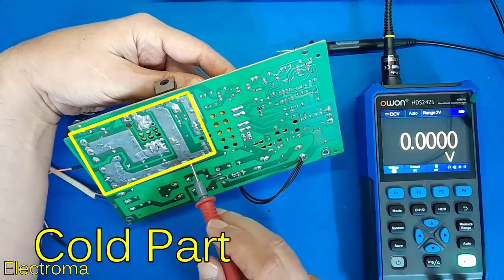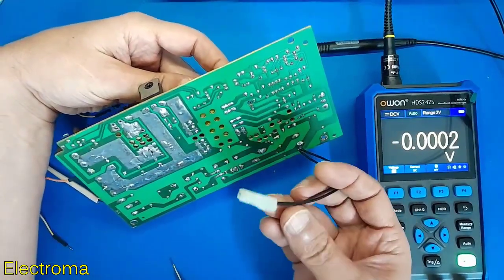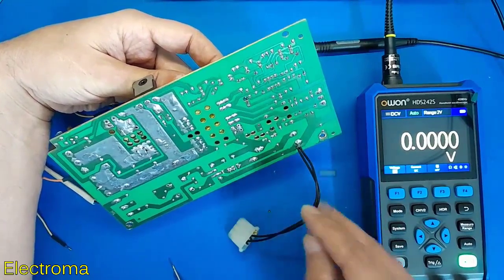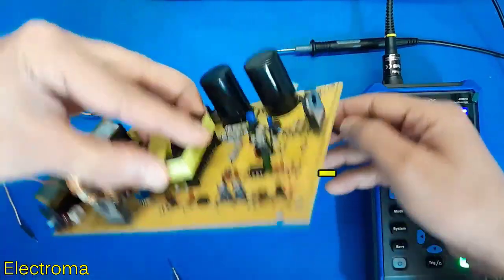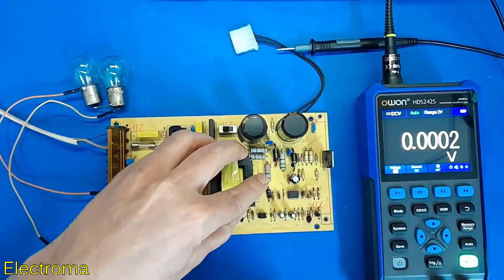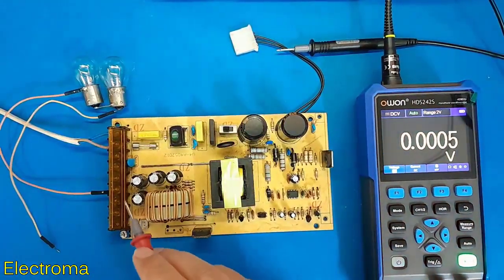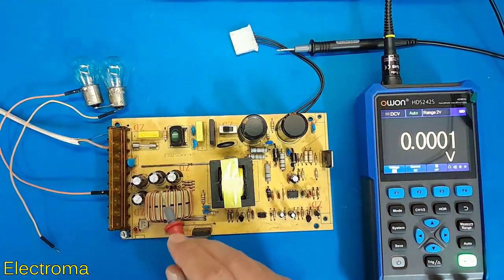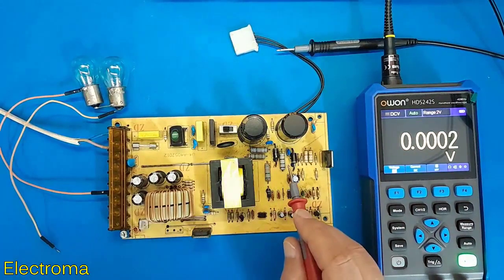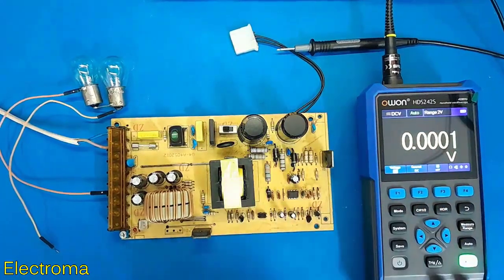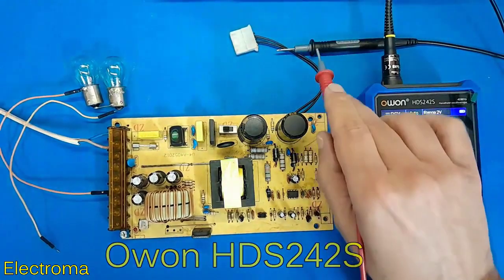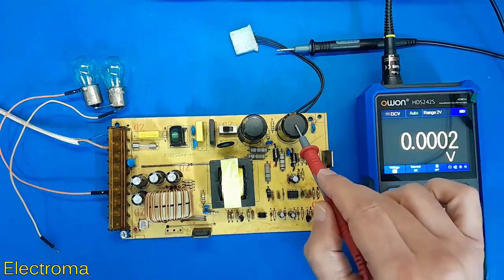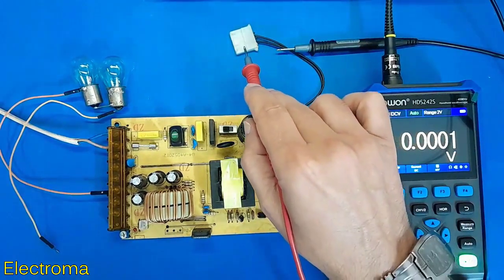For this I soldered a computer power connector to the negative of the capacitor. We never use the cold ground of the circuit to measure the voltage in the hot part because the wrong value are displayed. This is a three connection device. I connect the negative probe to the negative capacitor through this connector.